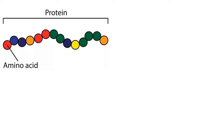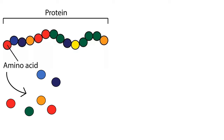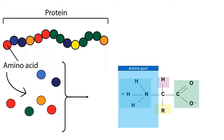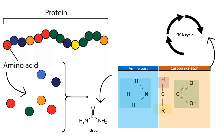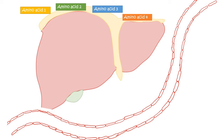Our focus here is how protein breakdown occurs at a molecular level. Proteins are broken down into amino acids. The amine part of the amino acid generates ammonia, which is excreted as urea, whereas the carbon skeleton is recycled and used in biosynthetic pathways such as the TCA cycle.